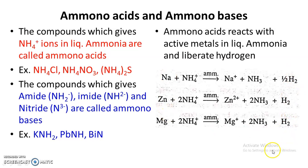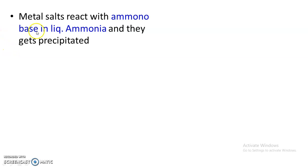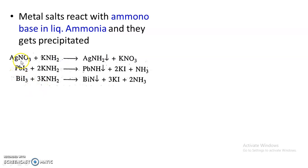Metal salts react with amino bases in liquid ammonia and form precipitates. For example, silver nitrate reacts with the amino base potassium amide to precipitate silver amide. Lead iodide treated with potassium amide precipitates lead amide. Bismuth iodide mixed with potassium amide (an amino base) precipitates bismuth nitride.